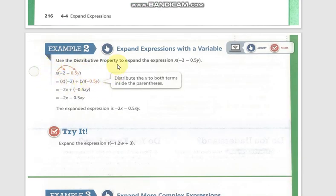And here, in example number two, we can see that we are going to multiply each term inside the parentheses with the variable or number, whatever, outside.